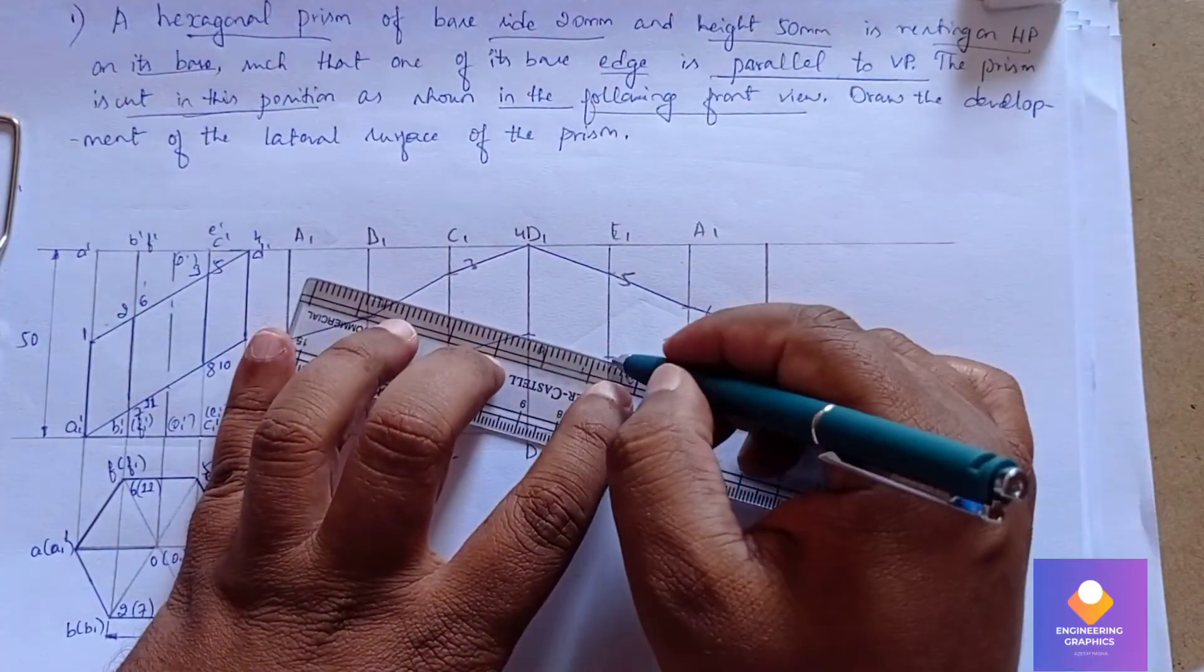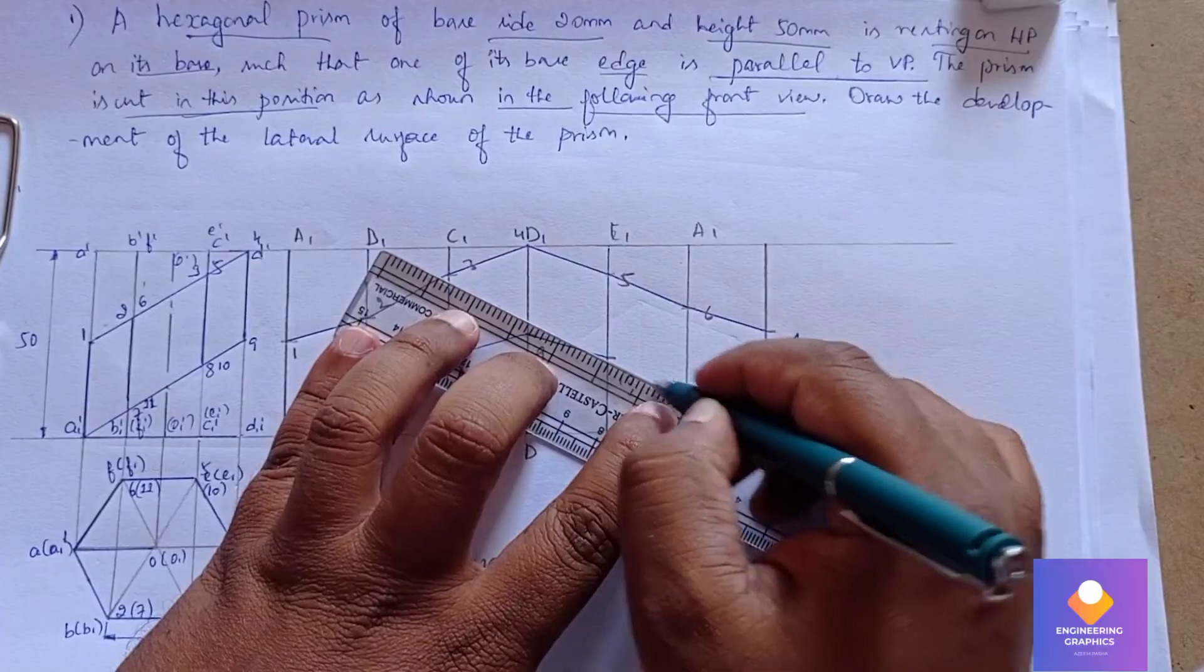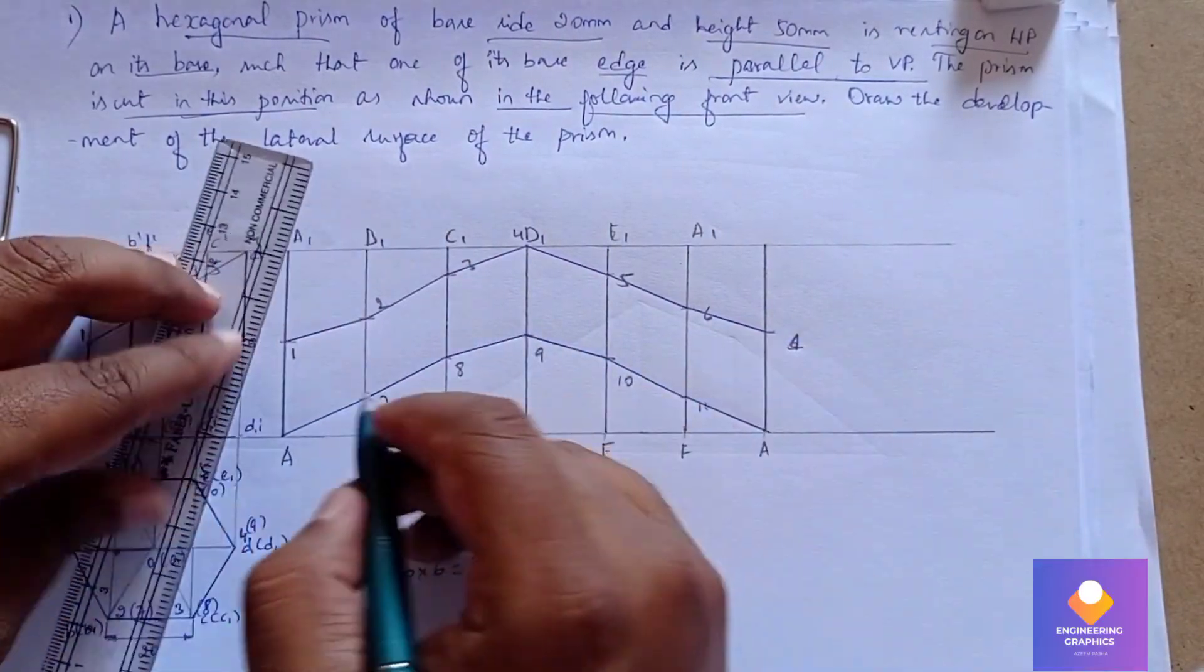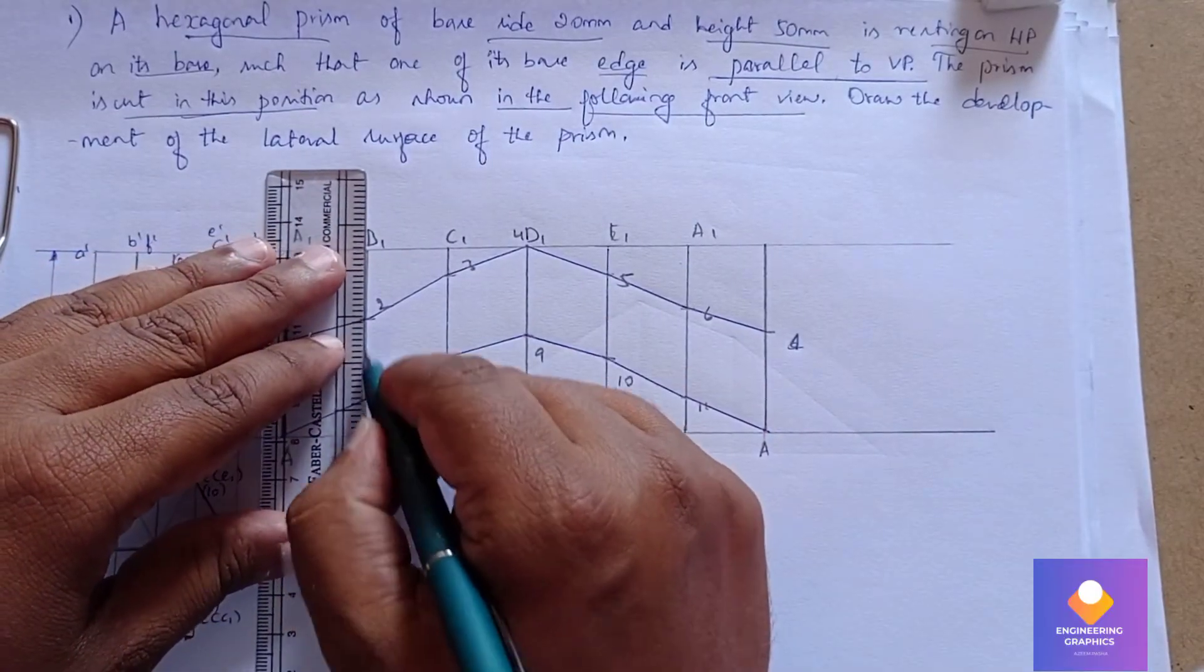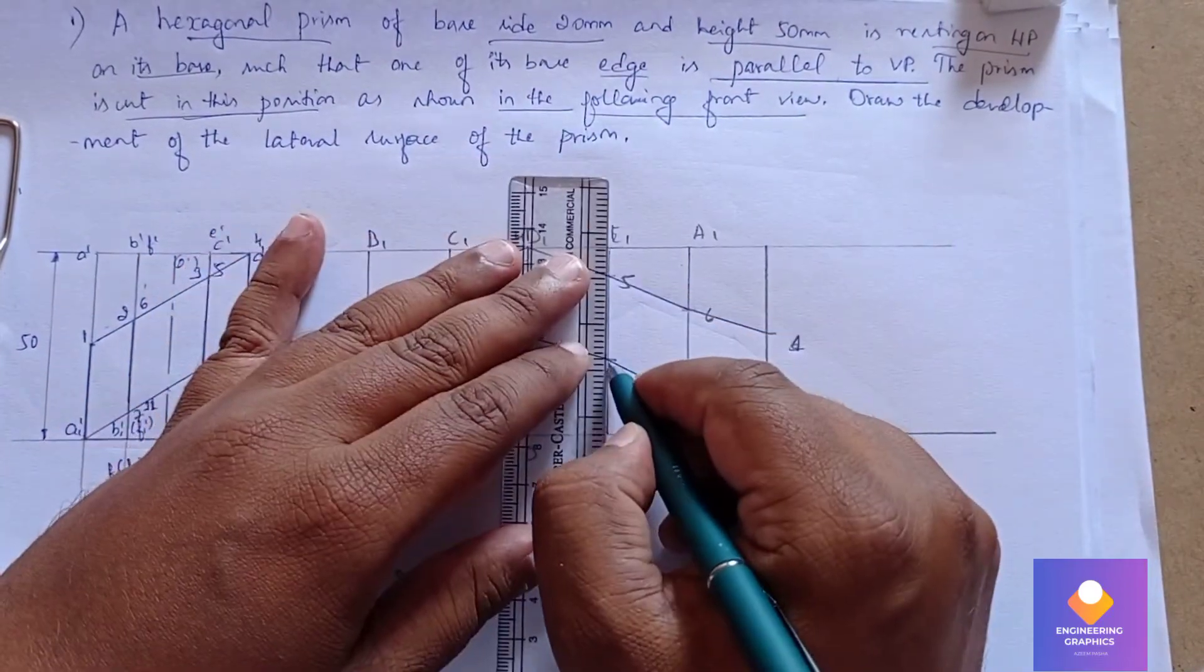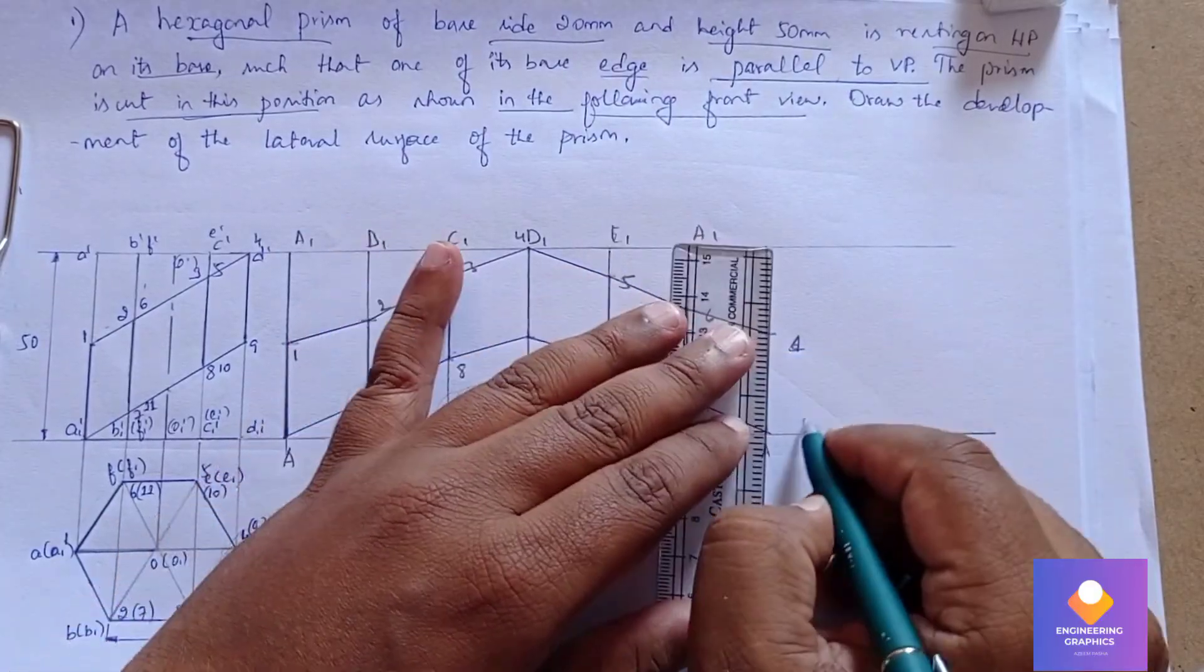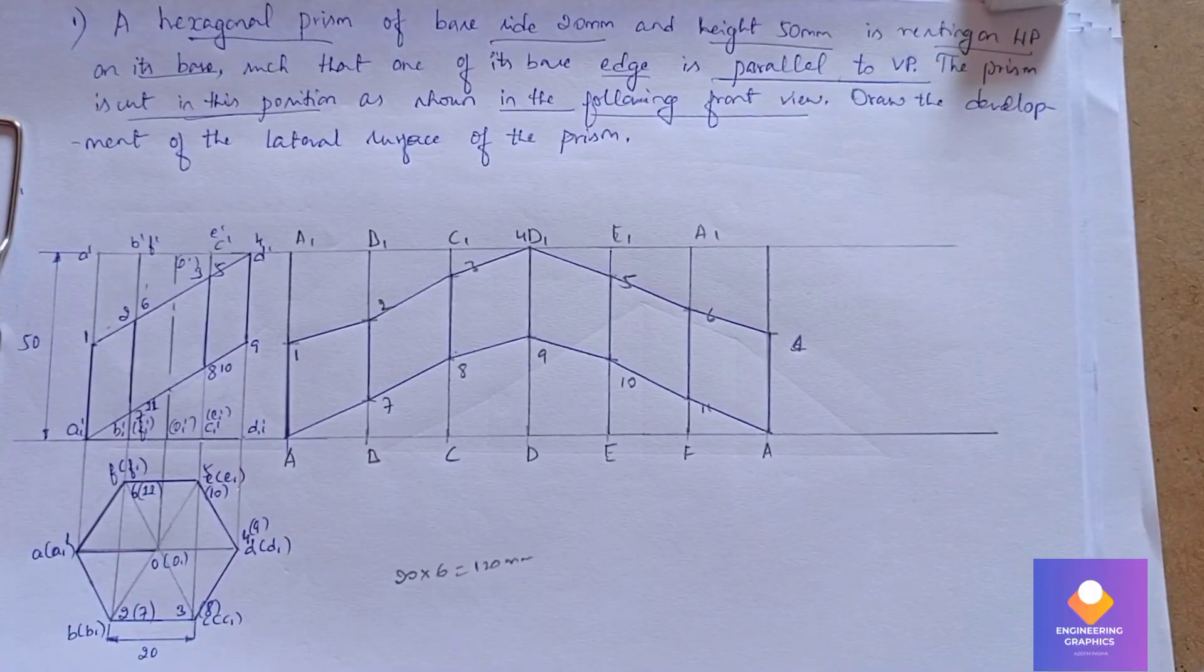9 to 10, then 10 to 11, and then 11 to A we need to join. Now to darken these vertical edges - this is the retained cut portion of that hexagonal prism. So we have to darken this, and that completes the problem.